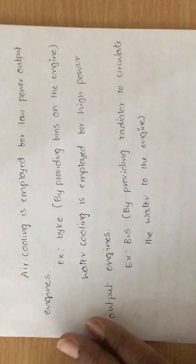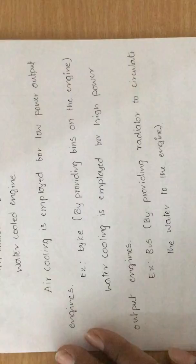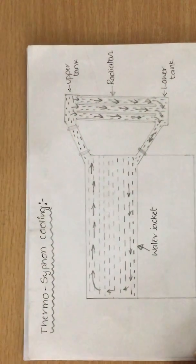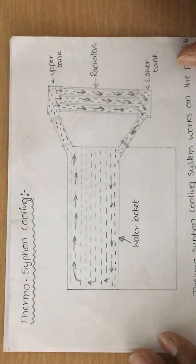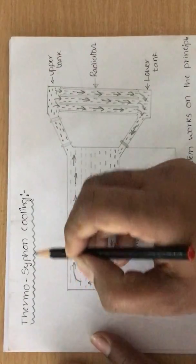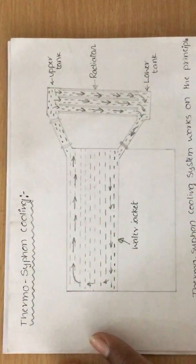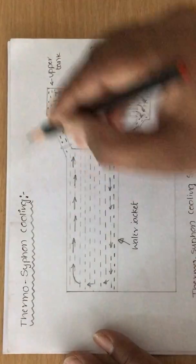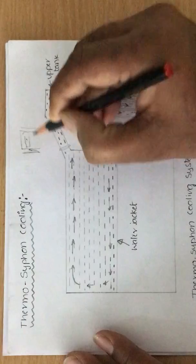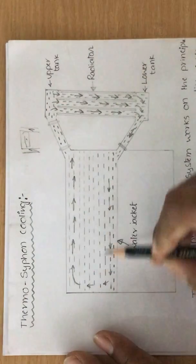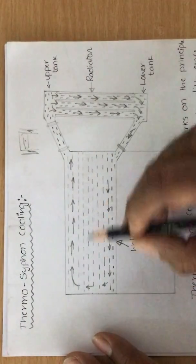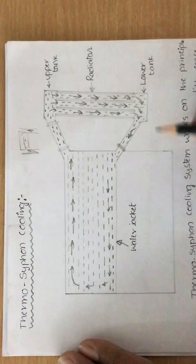We have to circulate water to the engine to take the heat from the engine. Let us see one example. This is the system of a water cooled engine, and this type of water cooling is called the thermosiphon cooling system. This is the engine. For example, in the cylinder arrangement inside the piston, at the outside there is a water jacket in which water is circulating. This is the water jacket — I have shown it in a large shape in the diagram to help understand. This is the engine where the piston reciprocates.